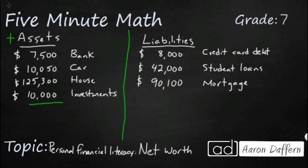So what is our total assets? We're just going to add this up and take these values at face value. When calculating net worth, they're going to give you these values — they're not going to make you try to guess how much your house is worth. So that's going to be $152,850 in total assets.